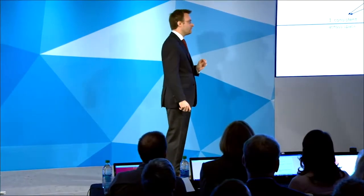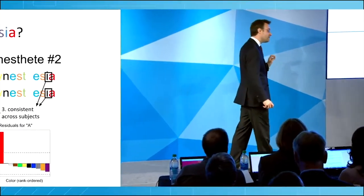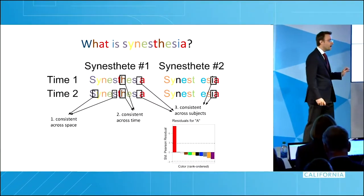When most of you look at the text on this slide, you see it written in blue. But for about 2% of you, it all looks like this. Synesthetes experience letters of the alphabet as having a consistent color.